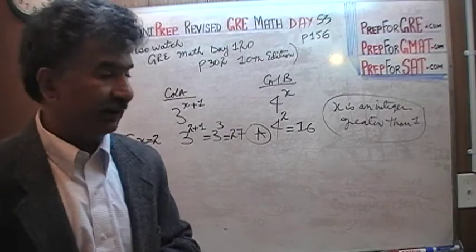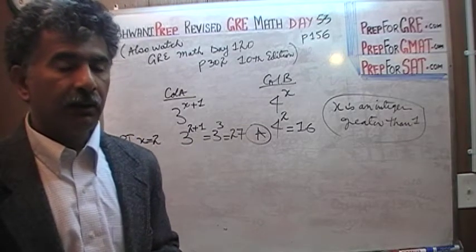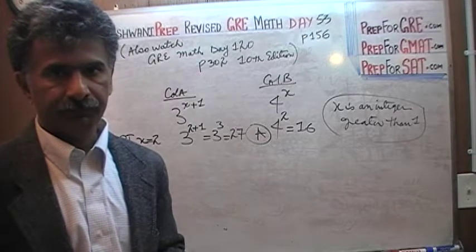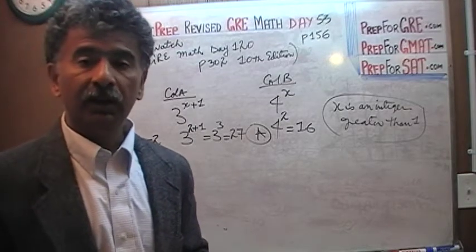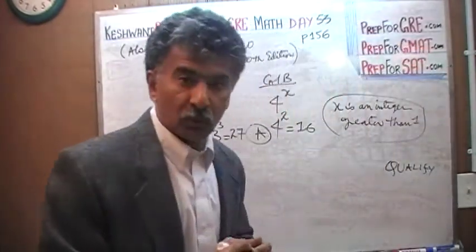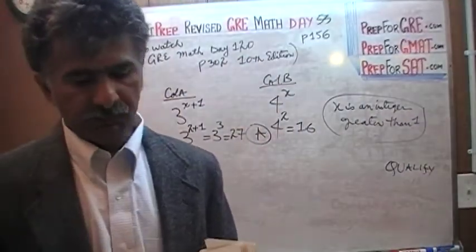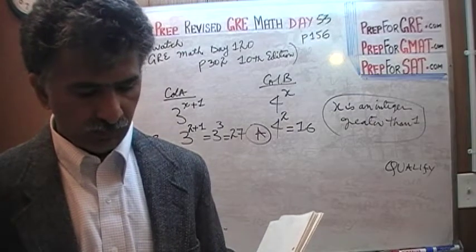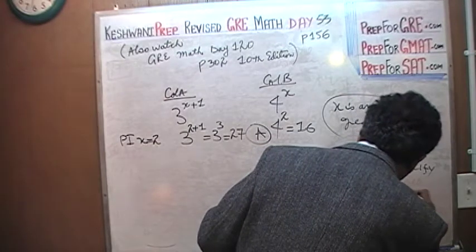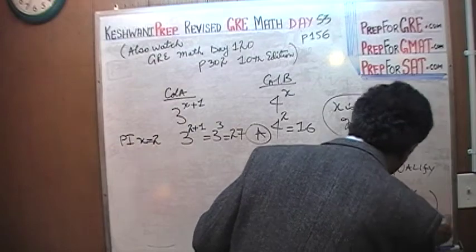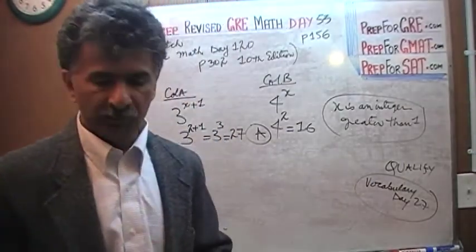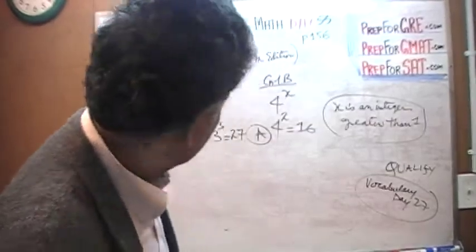Notice how I qualified my statement — I did not simply say the answer is A. I said 'based on the work done so far,' putting a condition on it. The word 'qualify' has two meanings; I covered this on day number 27 of my vocabulary videos. Just type in the tag: vocabulary GRE vocabulary day 27, and you'll find it on YouTube.